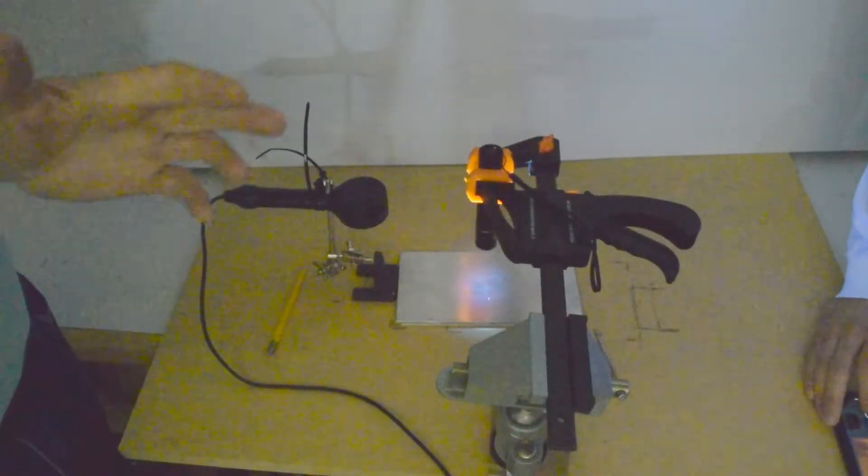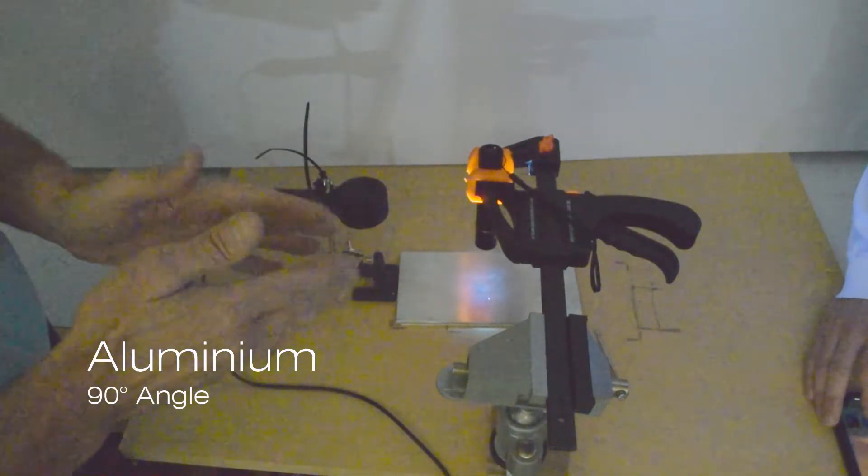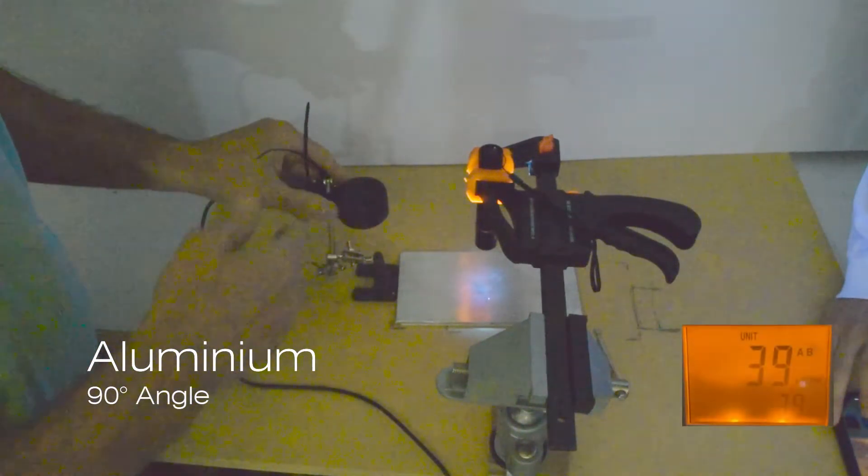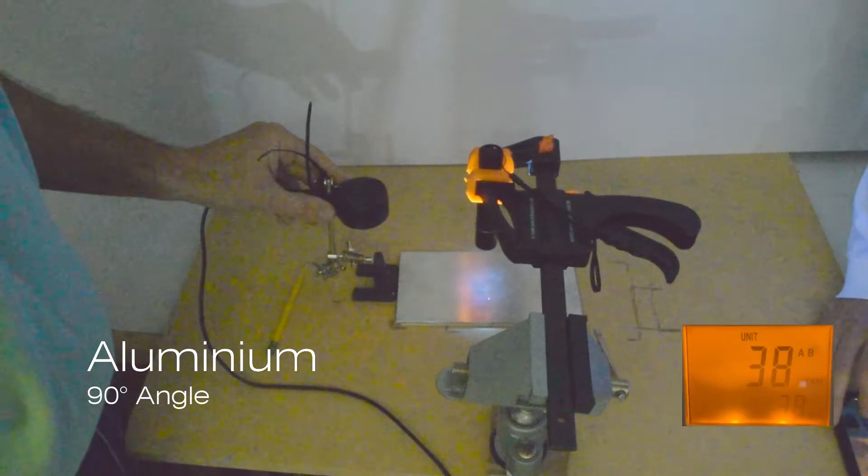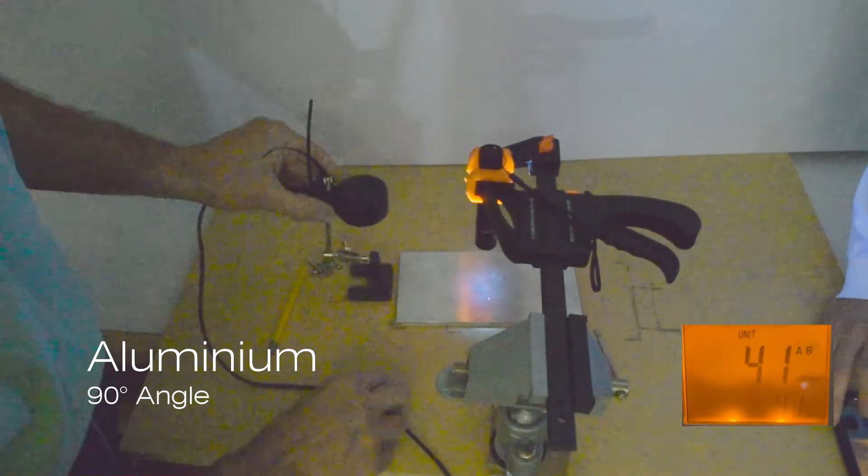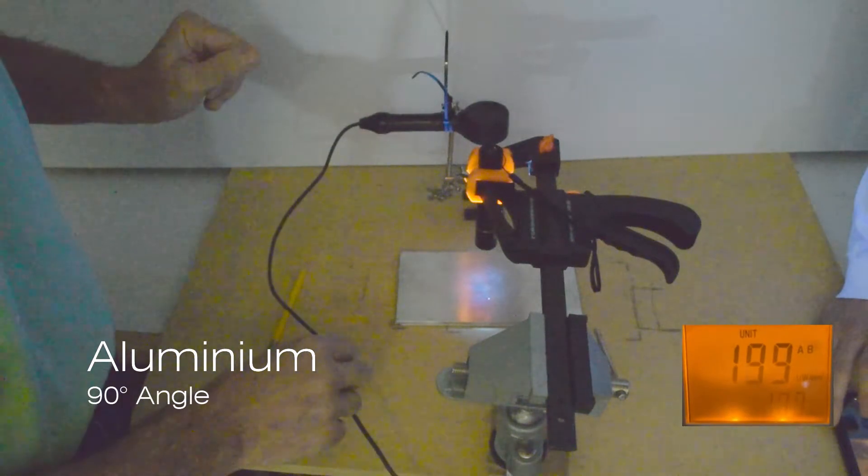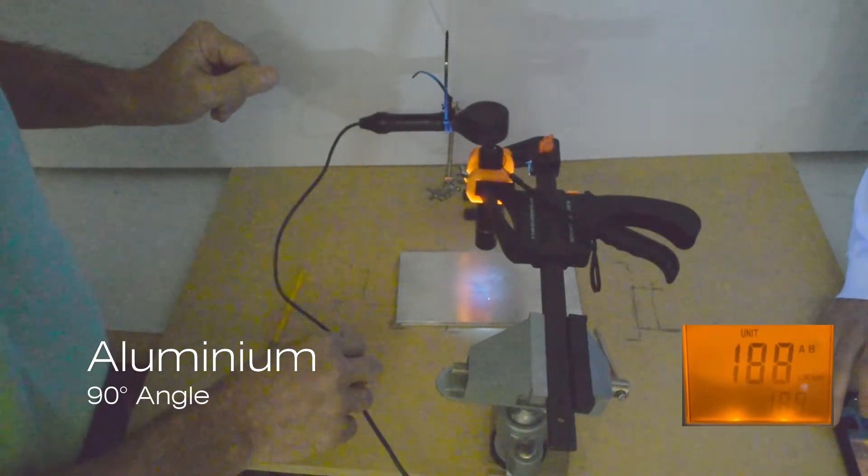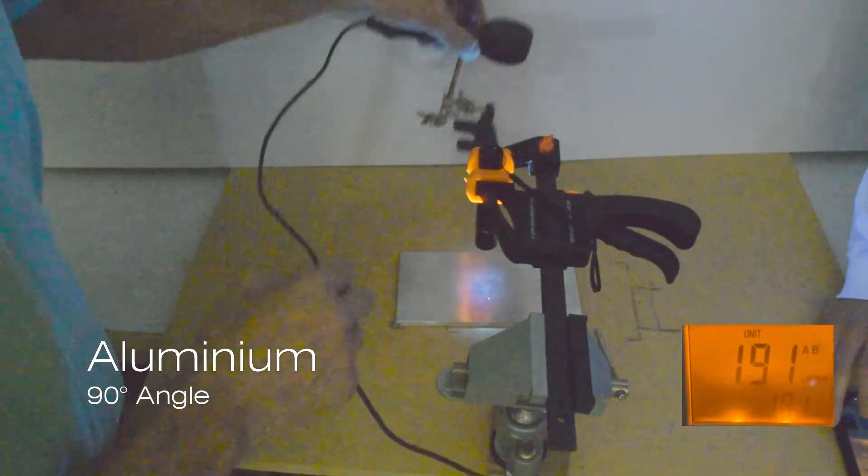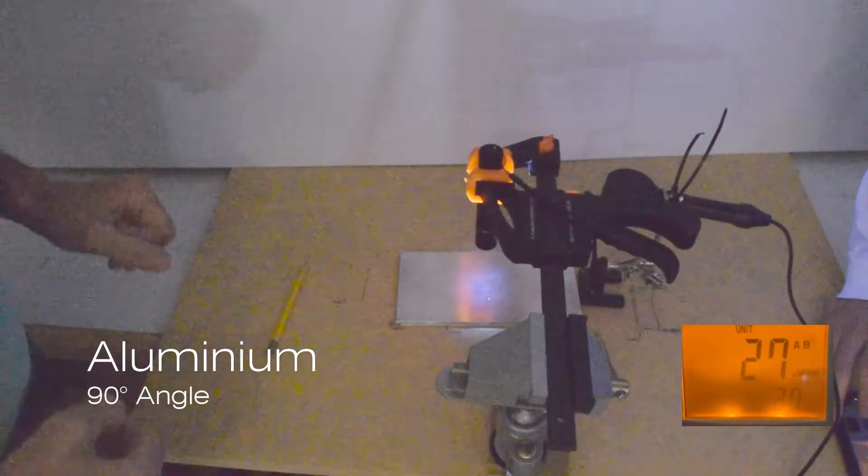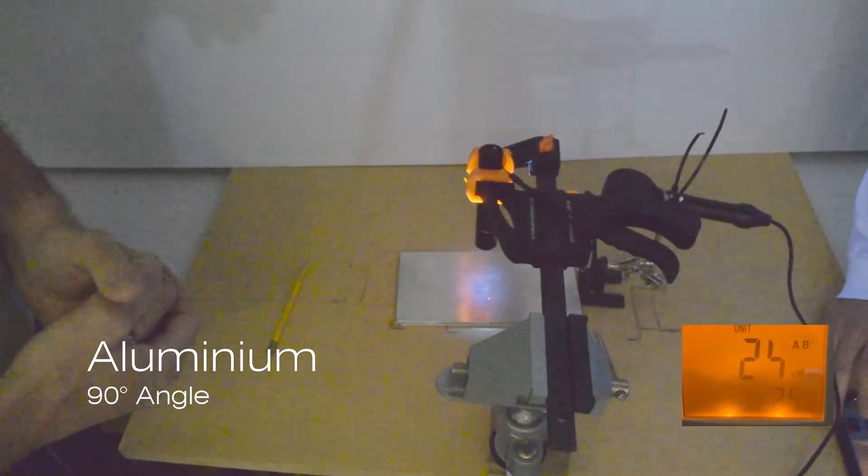Now we will do the experiment going at a 90 degree angle. Again, from one side, you can see the reading around 40. Around 180 and then from the other side, again around 25 or 30.